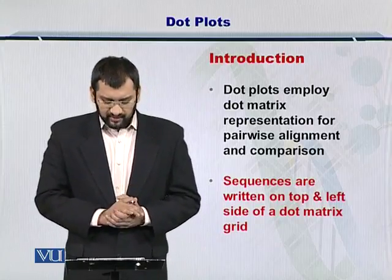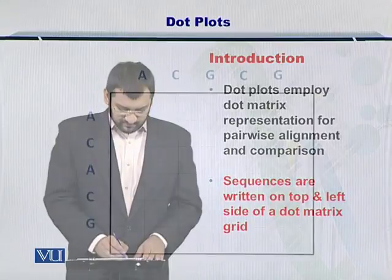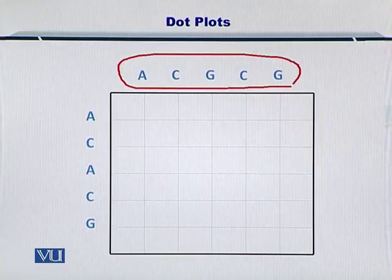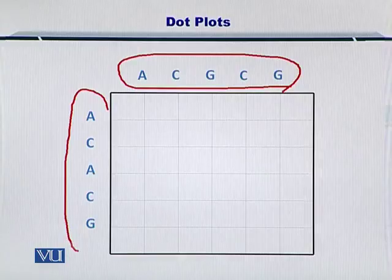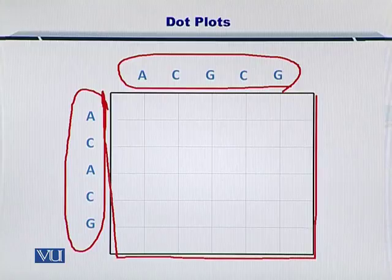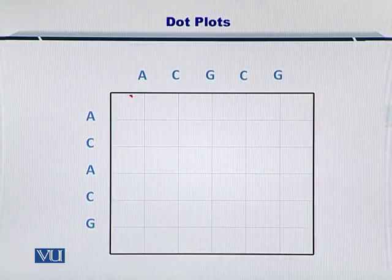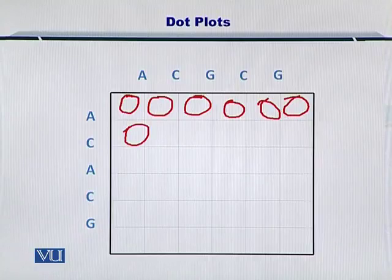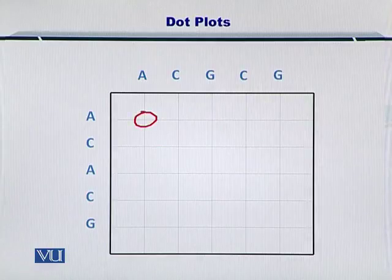To begin with, the first thing that you need is a matrix with the two sequences written on top and on the left side. This is sequence number one, this is sequence number two, and this grid is drawn such that the number of squares is exactly equal to the nucleotides presented here.